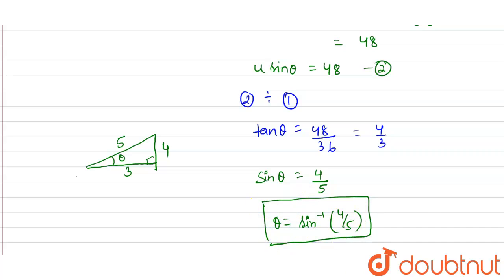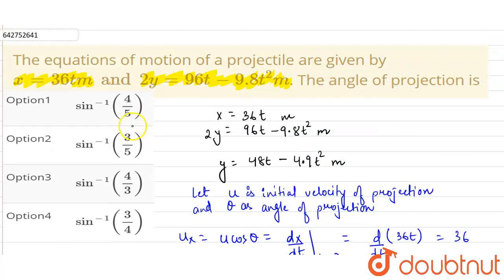Now checking out from the options, that is sin inverse 4 by 5, that is option number 1. So option number 1 is the correct option, that is sin inverse 4 by 5. Thank you.